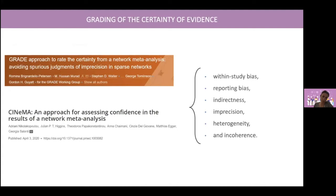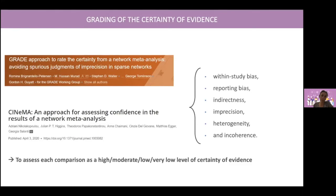Both are based on several domains: within-study bias, reporting bias, indirectness, imprecision, heterogeneity, and incoherence. Using these domains, we will, for each comparison, assess the result as a high, moderate, low, or very low level of certainty of evidence.